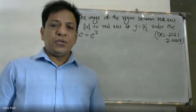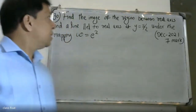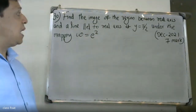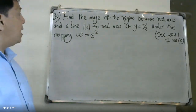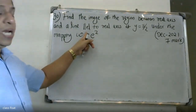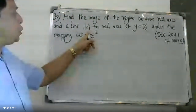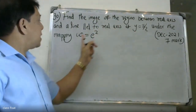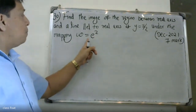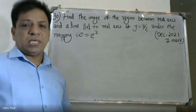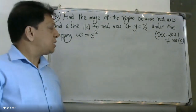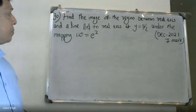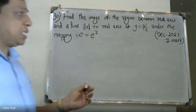Good morning students. The question is: find the image of the region between the real axis and a line parallel to the real axis at y = π/2, under the mapping W = e^z.